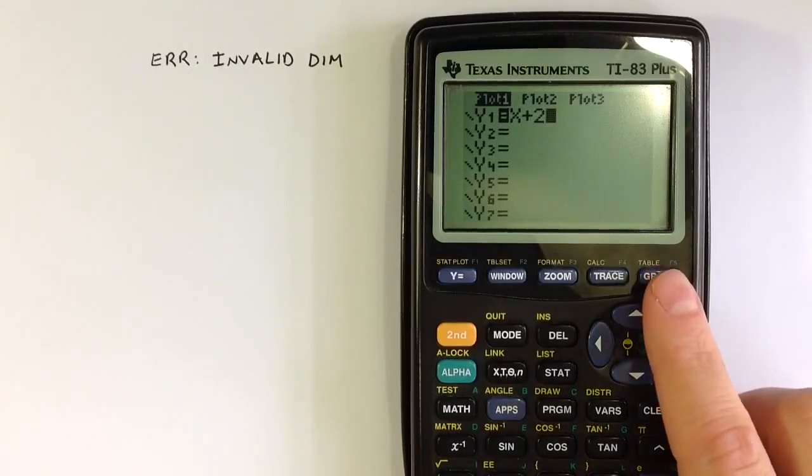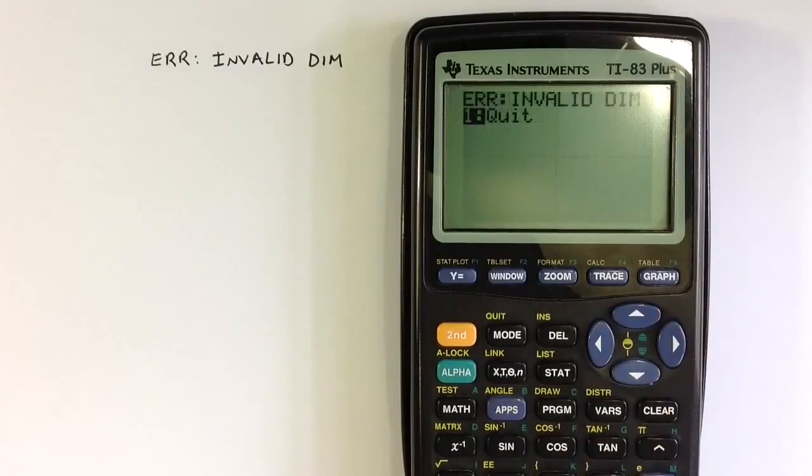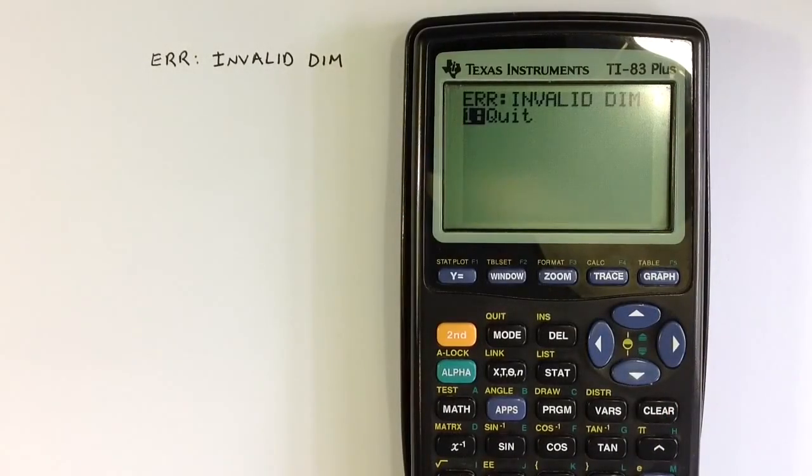If you're trying to create a graph on a TI-83 graphing calculator and when you hit the graph key, the error message invalid dim appears, it probably means that one of the stat plots is turned on and needs to be turned off.